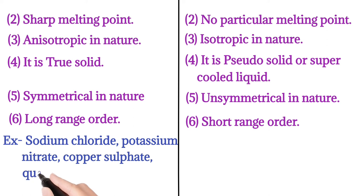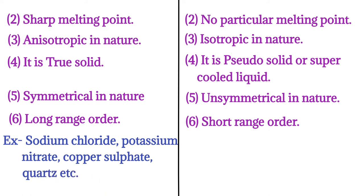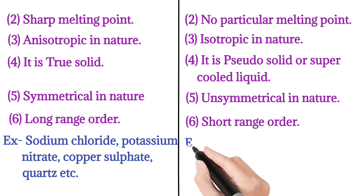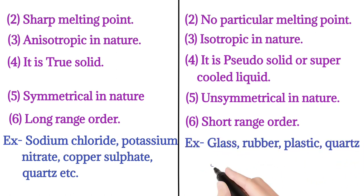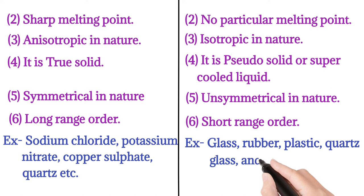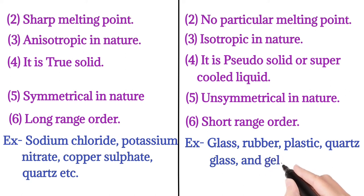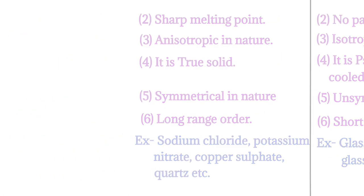Some examples of crystalline solids are sodium chloride, potassium nitrate, copper sulfate, and quartz. Examples of amorphous solids include glass, rubber, plastic, quartz glass, and gel.